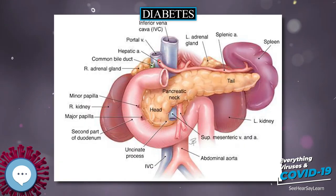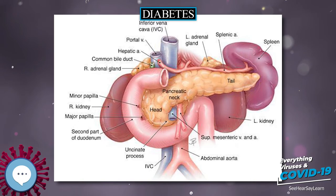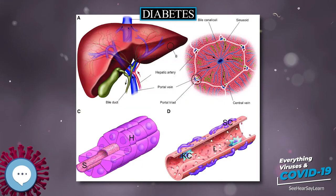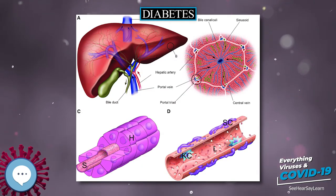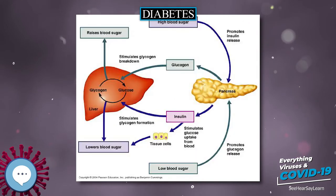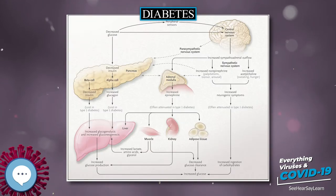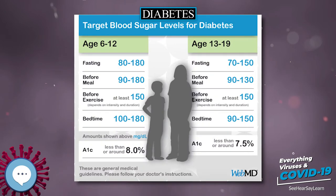The primary complications of diabetes due to damage in small blood vessels include damage to the eyes, kidneys, and nerves. Damage to the eyes, known as diabetic retinopathy, is caused by damage to the blood vessels in the retina of the eye and can result in gradual vision loss and eventual blindness. Diabetes also increases the risk of having glaucoma, cataracts, and other eye problems. It is recommended that people with diabetes visit an eye doctor once a year.